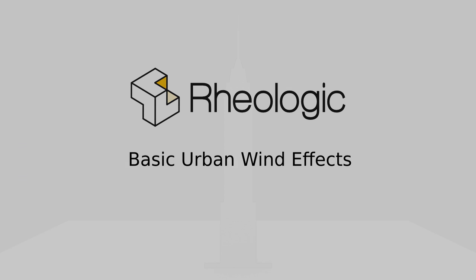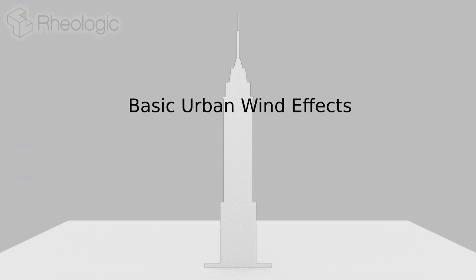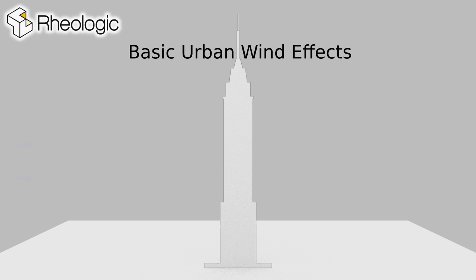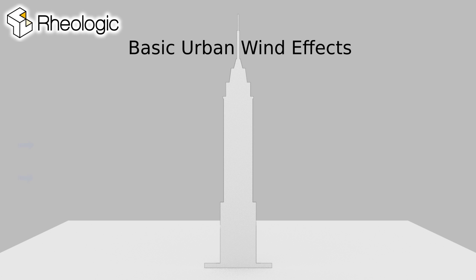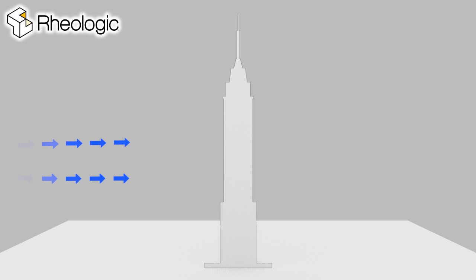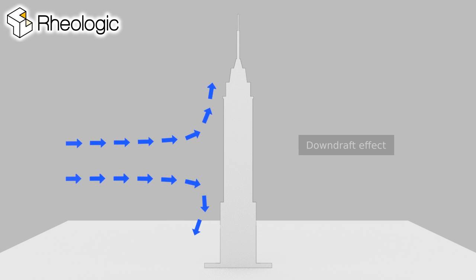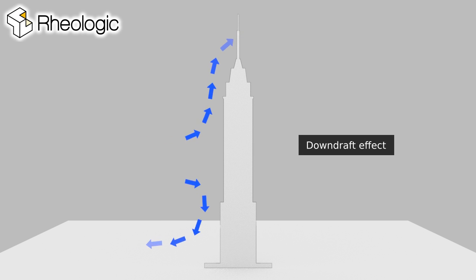In this video we are going to look into basic fluid dynamic principles that guide wind flow in urban areas. The first thing we are looking into is the so-called down-draft effect. It often occurs when wind hits high-rise buildings.